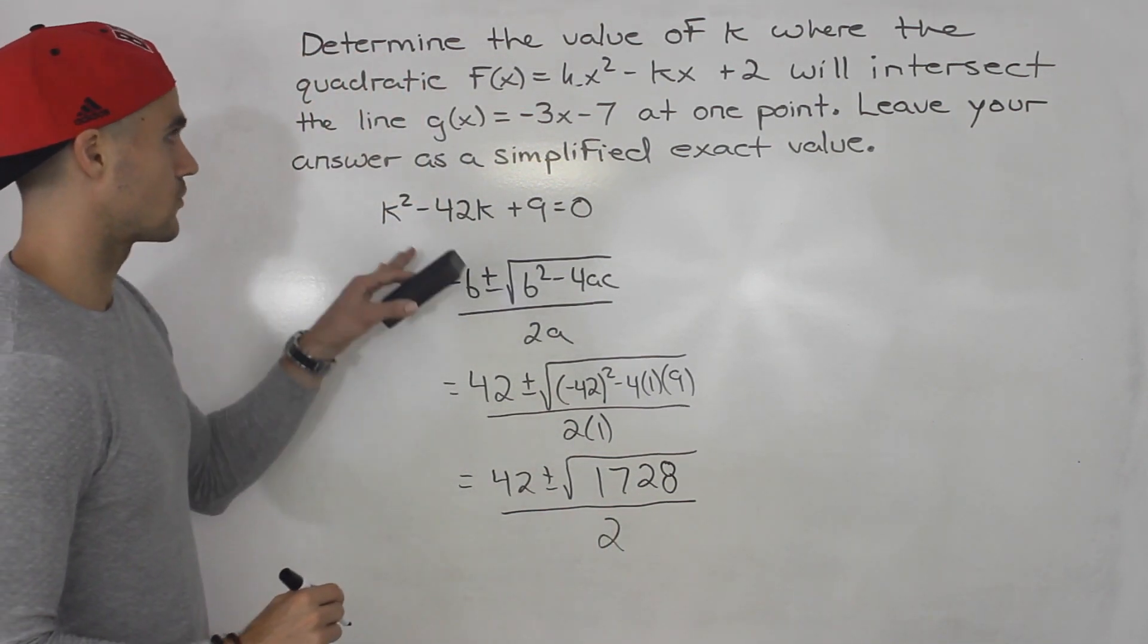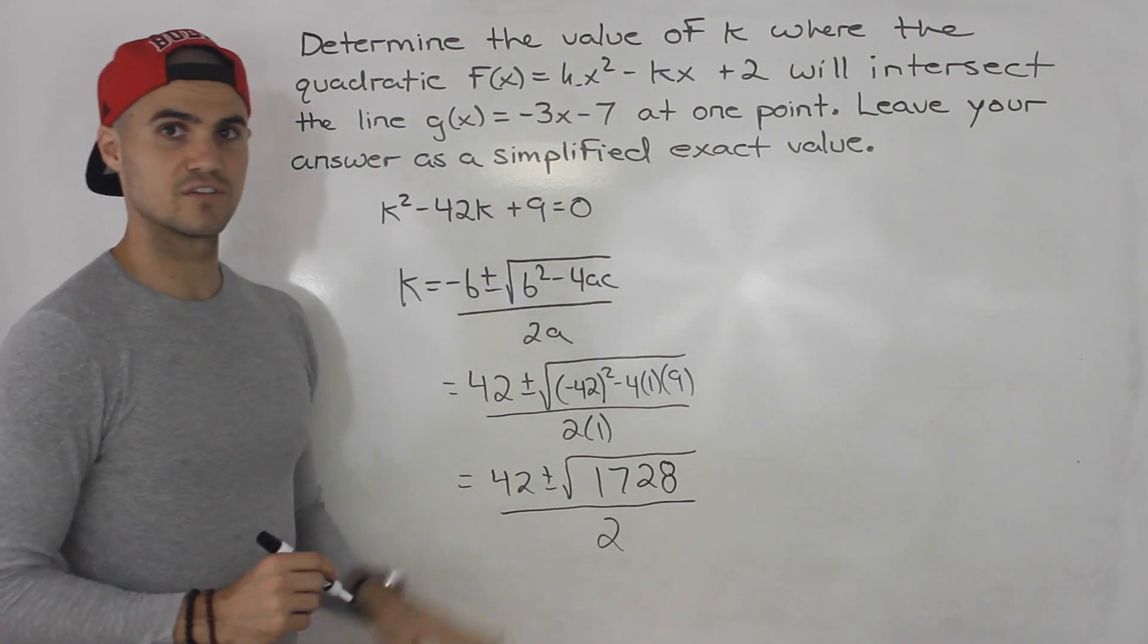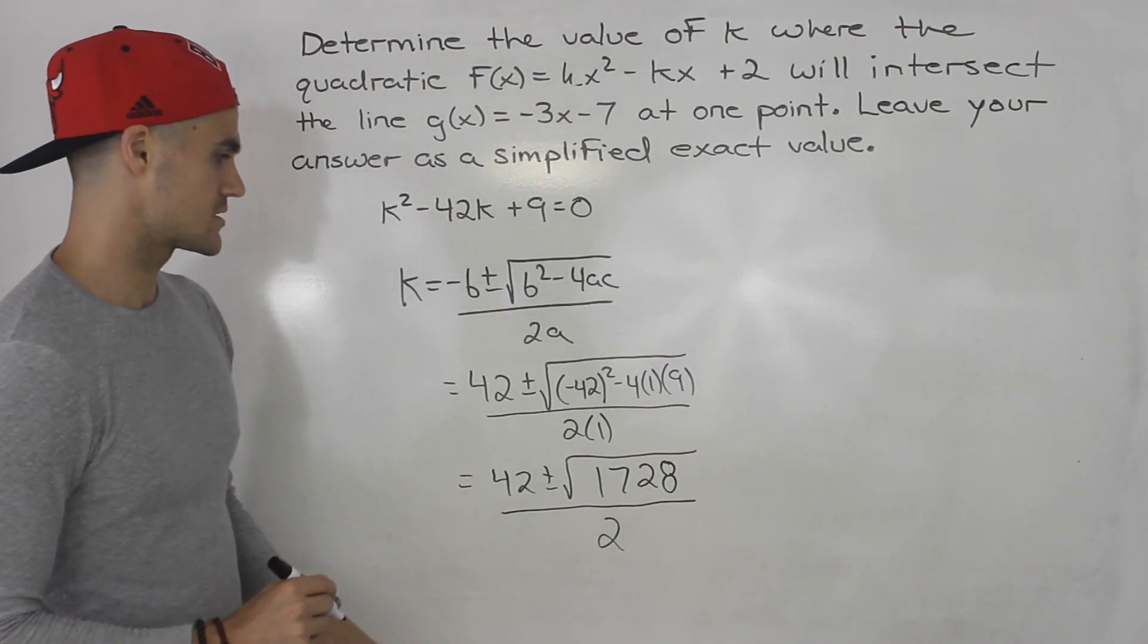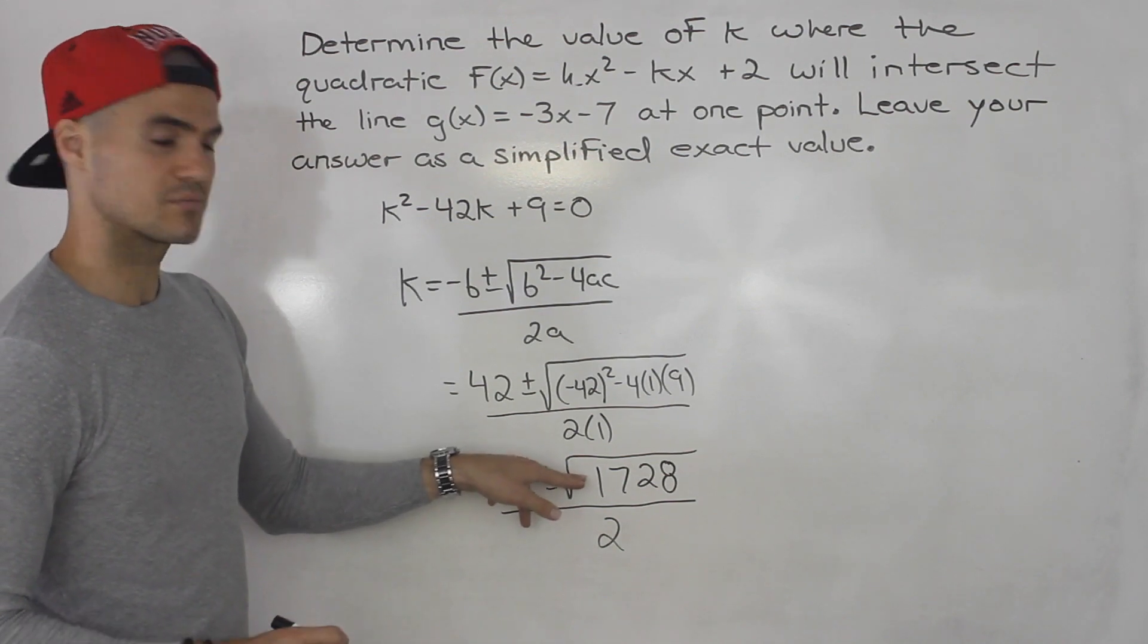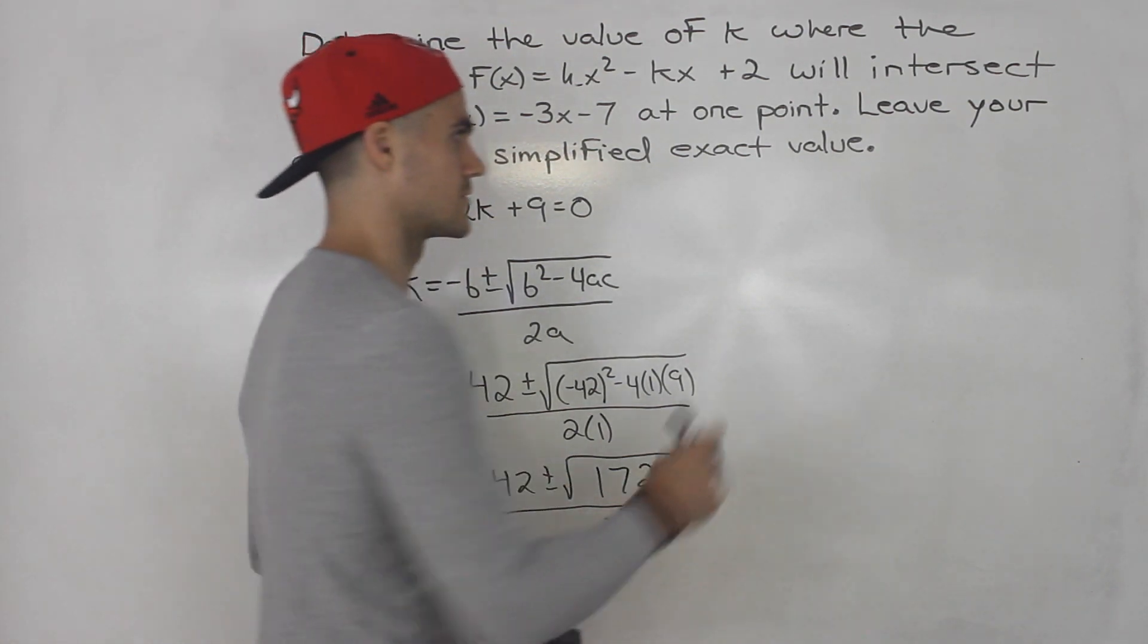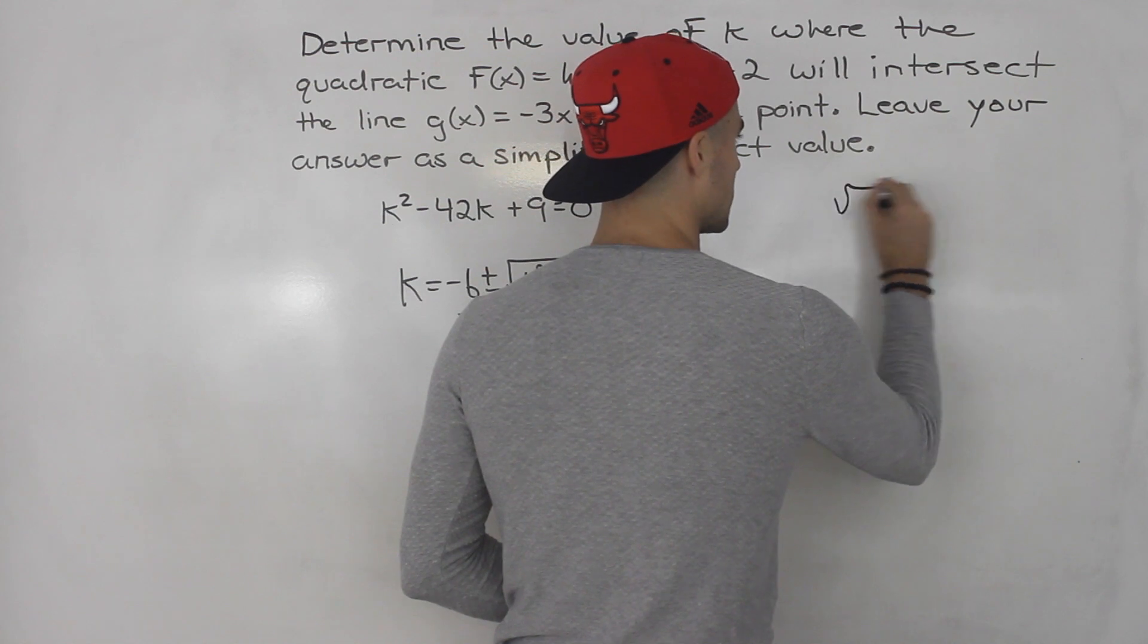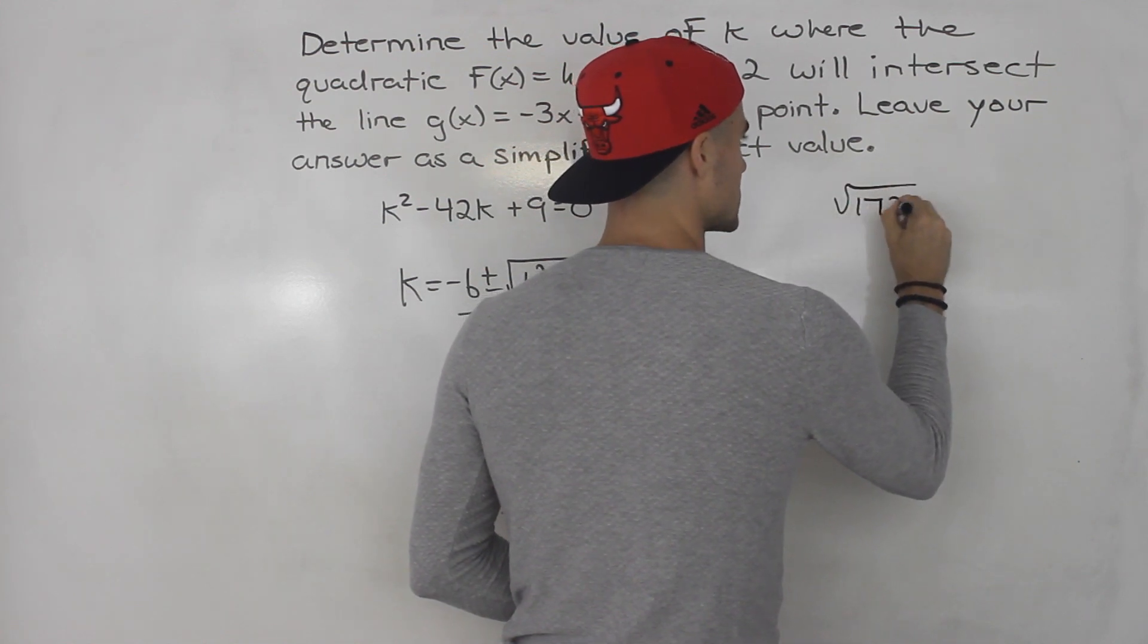So from here, we have to write our answer as a simplified exact value. So what you want to do at this point is you want to see if you can simplify this radical further. So let's write this radical on the side, we got root 1728.